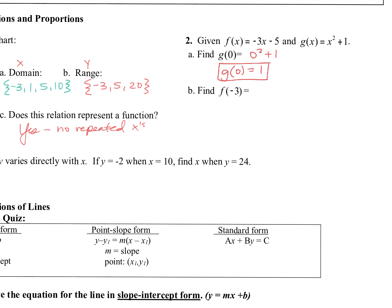Then we've got to do f of negative 3. We're going to plug that negative 3 in right here. So it's negative 3 times negative 3 minus 5. So f of negative 3 is 4 — positive 9 minus 5 is 4. Just plug in that value in for the x.